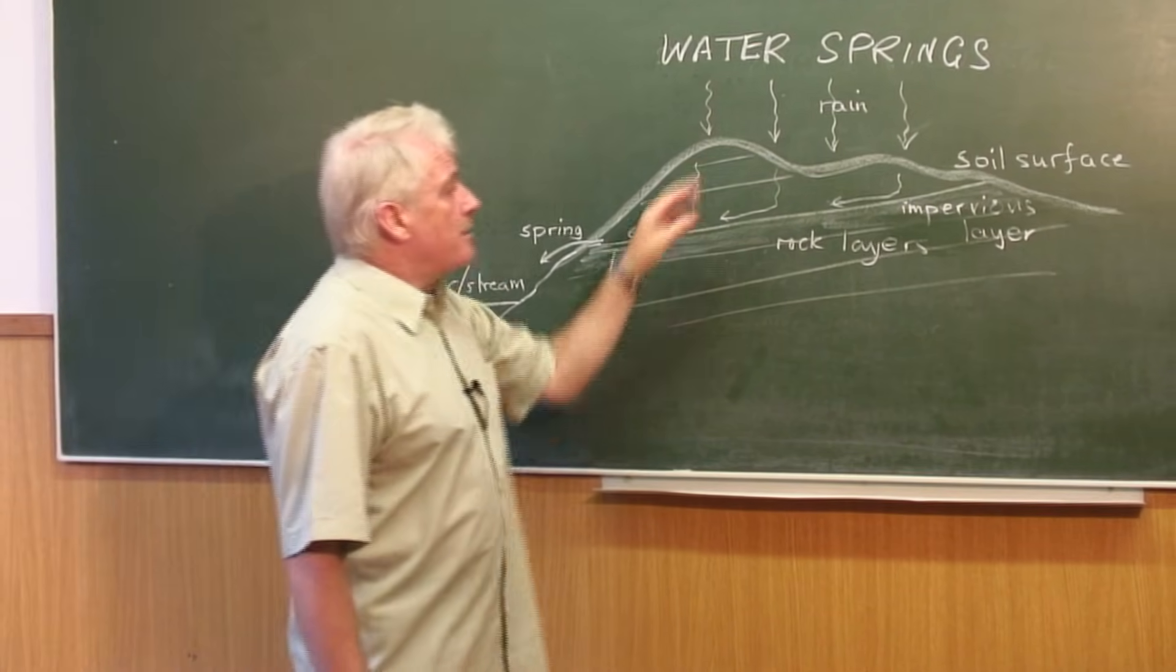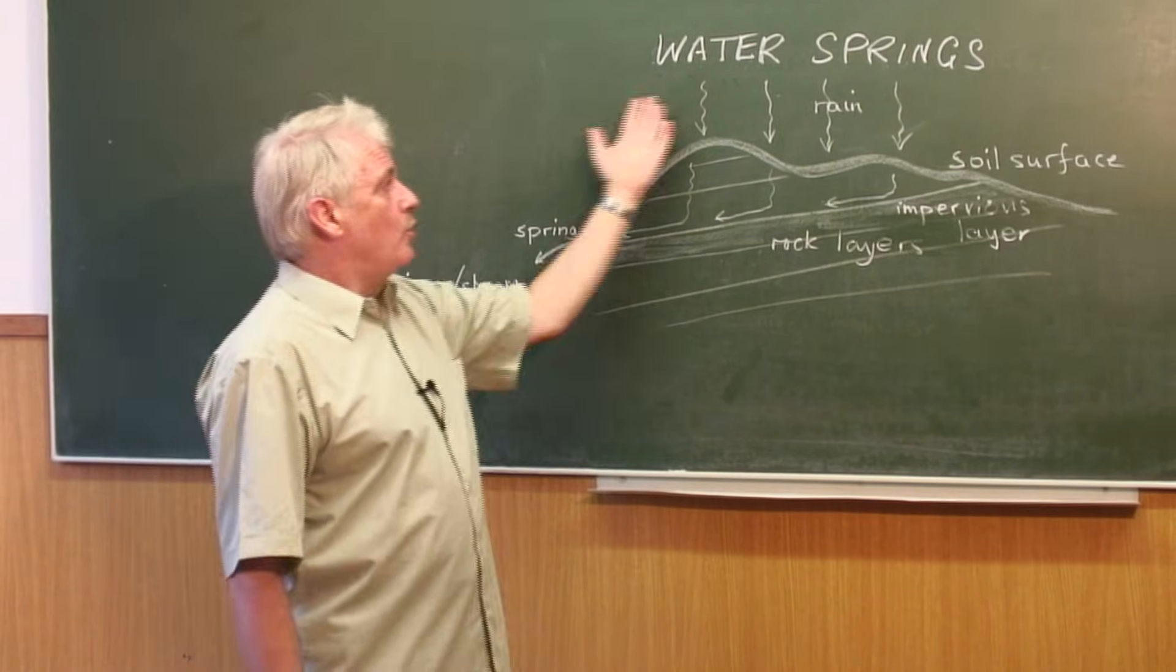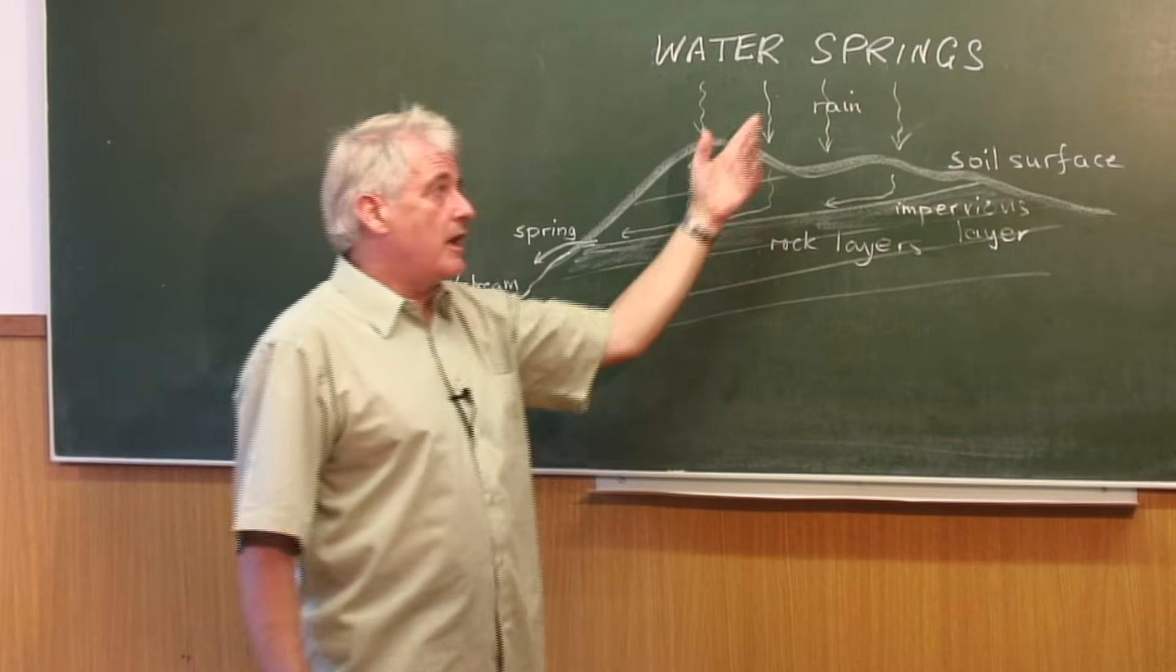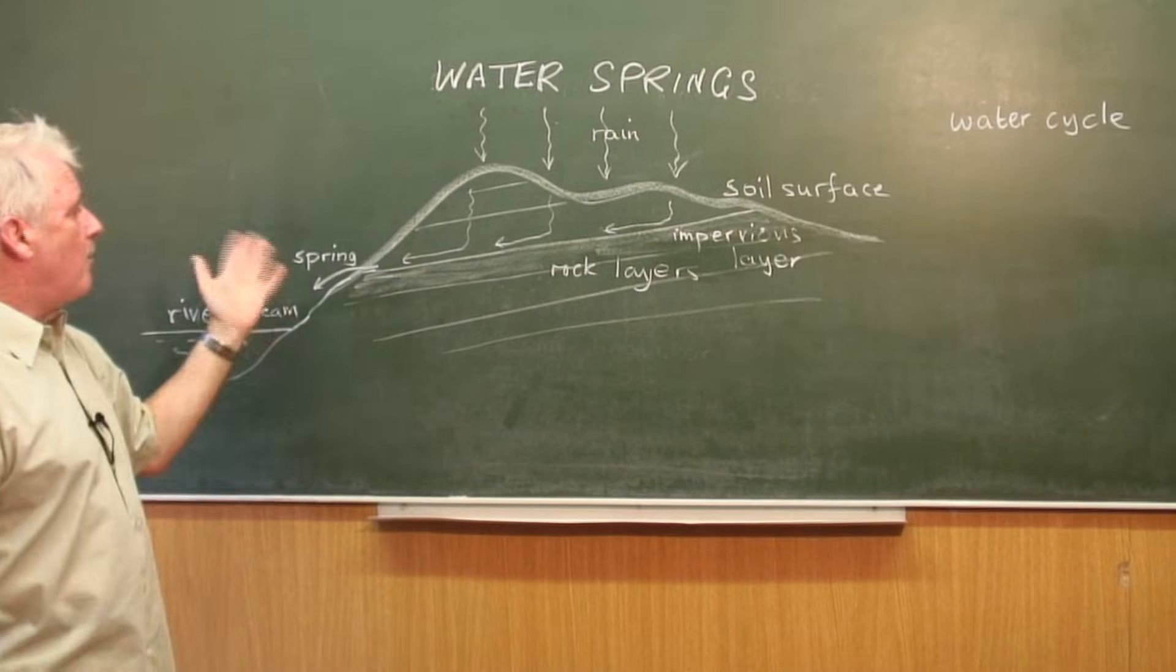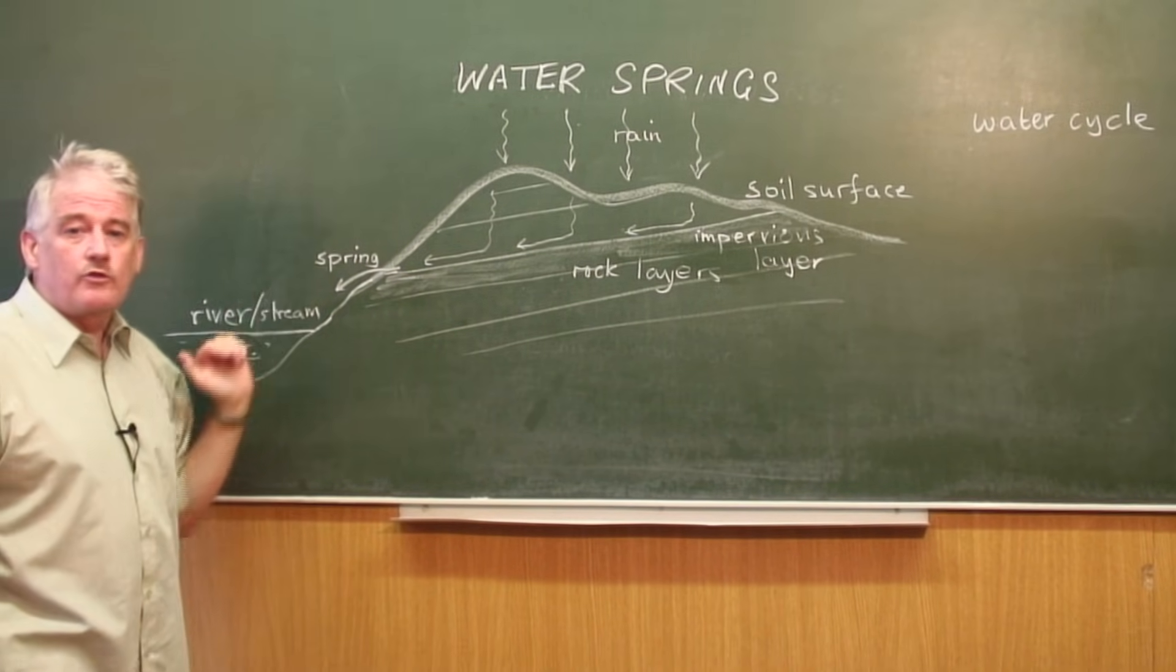But it was very important that somehow the water, which came from rain in what we call the water cycle, was collected somehow and was usable for, say, a village.